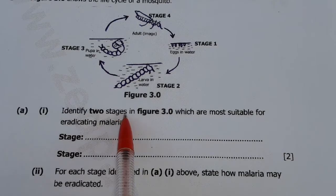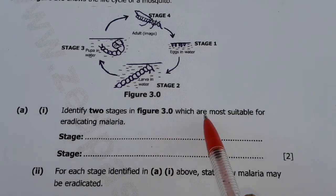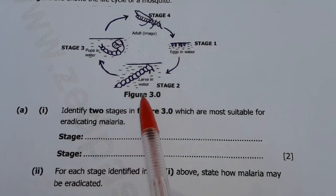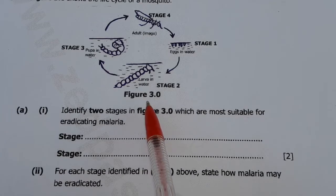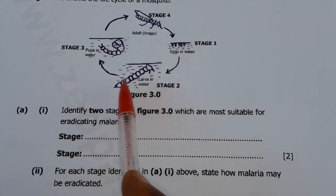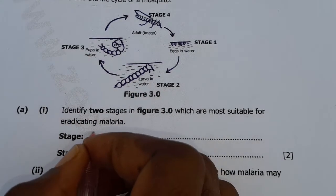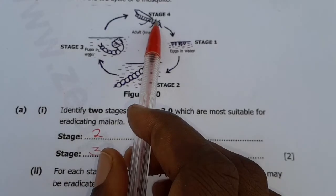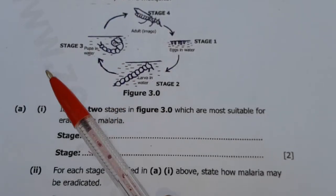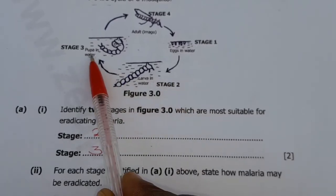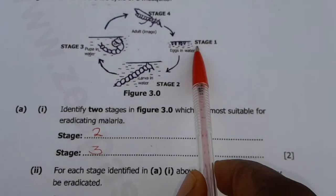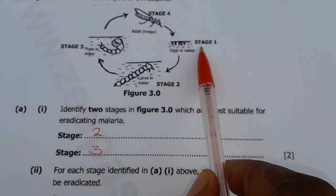The first question says: identify two stages in Figure 3.0 which are most suitable for eradicating malaria. The most suitable stages are stage 2 and stage 3. When it's at stage 4, the mosquito is already transmitting malaria. So the best are stage 2 and 3, and sometimes even stage 1 — you can kill the eggs of mosquitoes when they are still in the water.